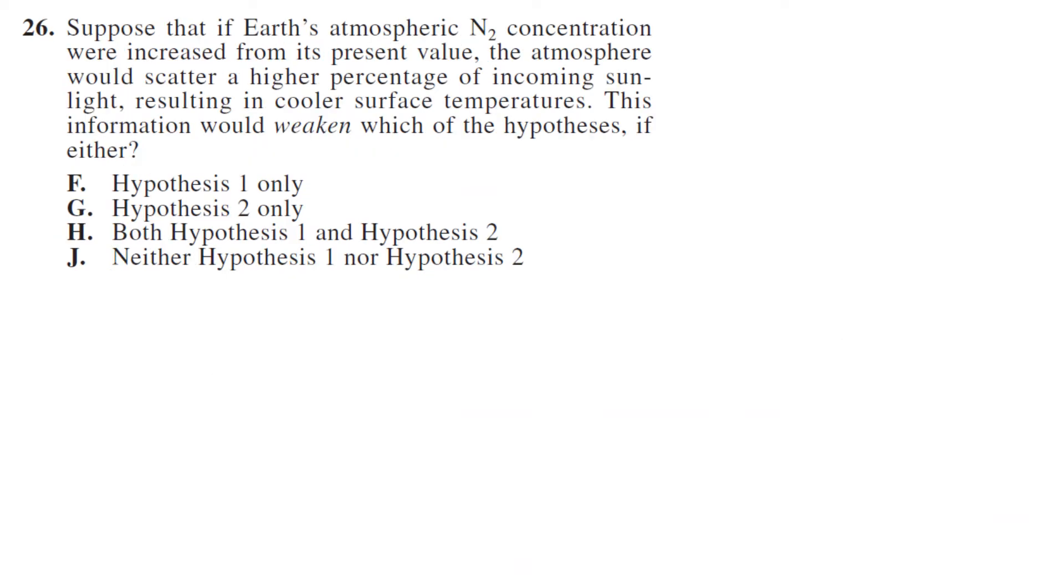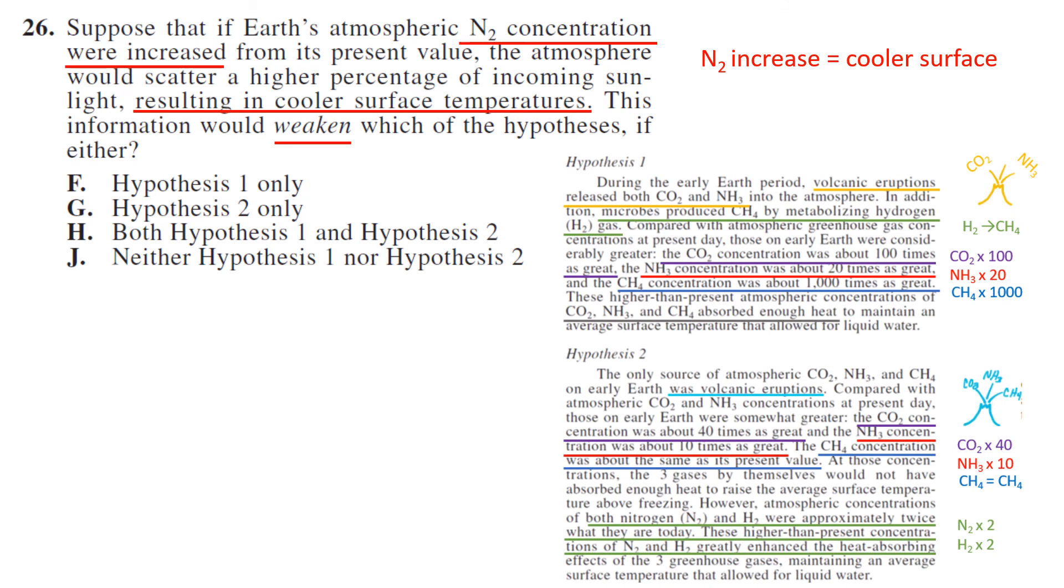Suppose that if Earth's atmospheric N2 concentration were increased, the atmosphere would scatter the sunlight resulting in cooler temperatures. This would weaken which of the hypotheses? So if N2 increases it equals a cooler surface. Which one would disagree with that? We see in hypothesis two, we remember this if we got the earlier questions right, that an N2 concentration was necessary, so it would weaken hypothesis two. So G.